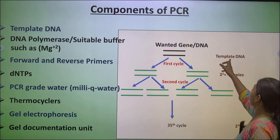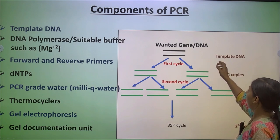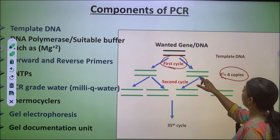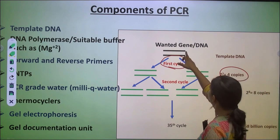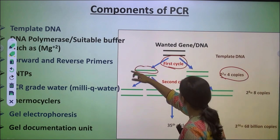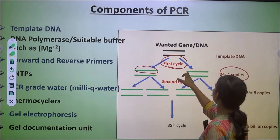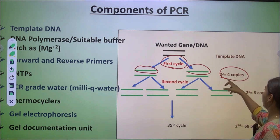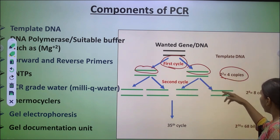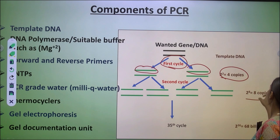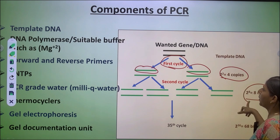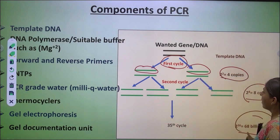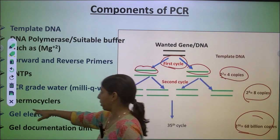This is the wanted gene, and this is our template DNA. During the first cycle, 2 to the power of 4 copies will be produced, because after strand separation one becomes the first template strand and the second becomes the second template strand. In the next cycle, 8 copies will be produced, and after the 35th cycle, billions of copies will be produced.